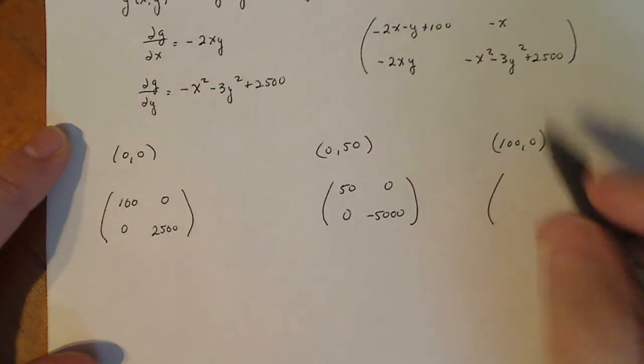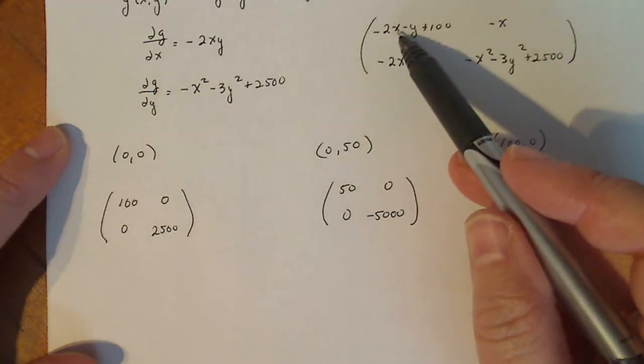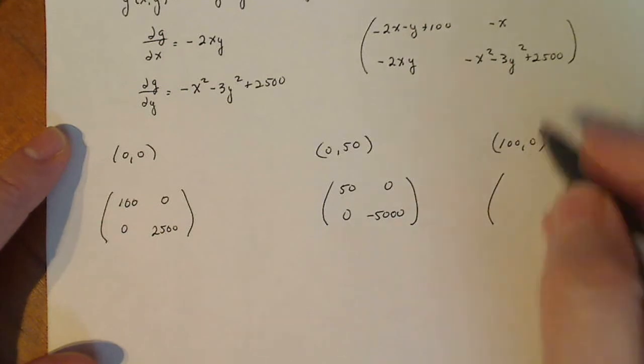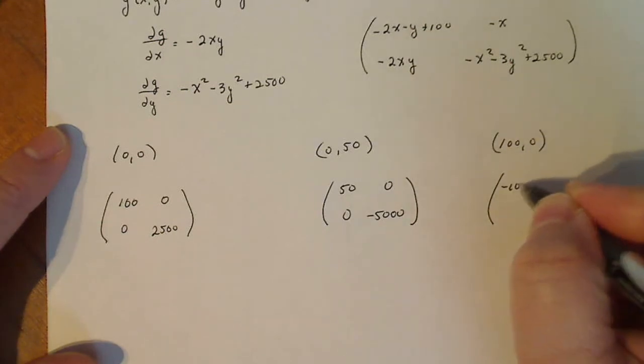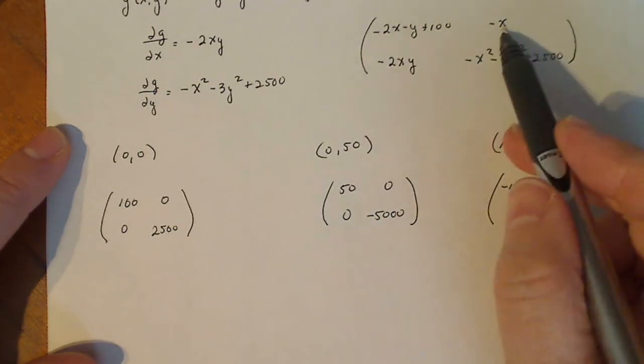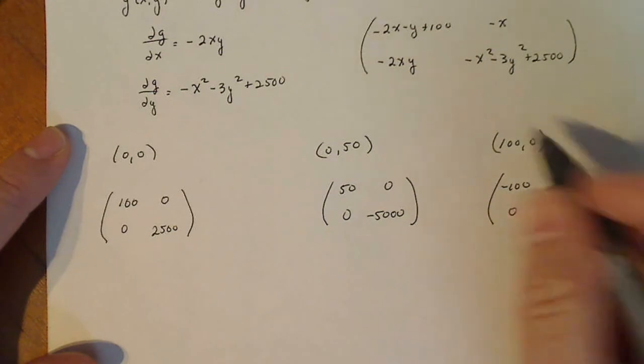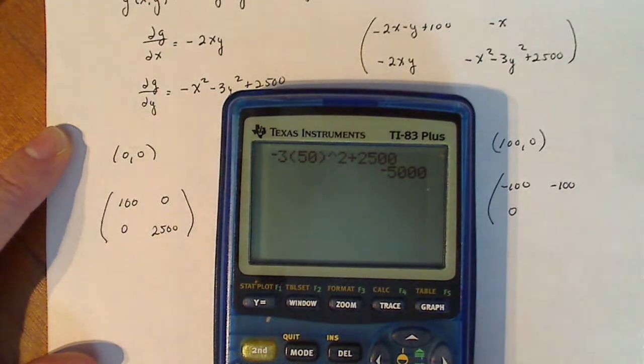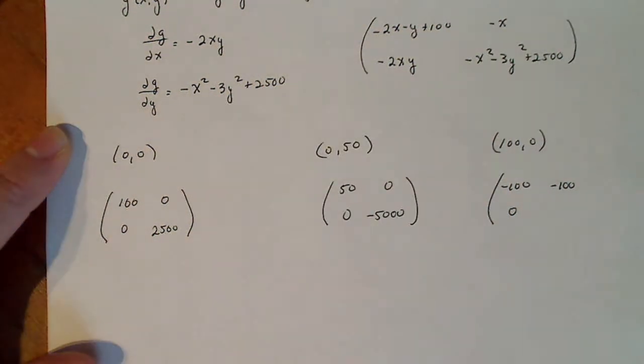And then for (100,0), I'm going to plug in 100 for Y, or I'm sorry, 100 for X and 0 for Y. So if I plug in 100 here and 0 here, I get minus 200 plus 100, so that's going to be minus 100. I'm going to get minus 100 here. Here I'm going to get 0, and then here I'm going to put in 100 for X and 0 for Y. So minus 100 squared plus 2,500 gives me minus 7,500.